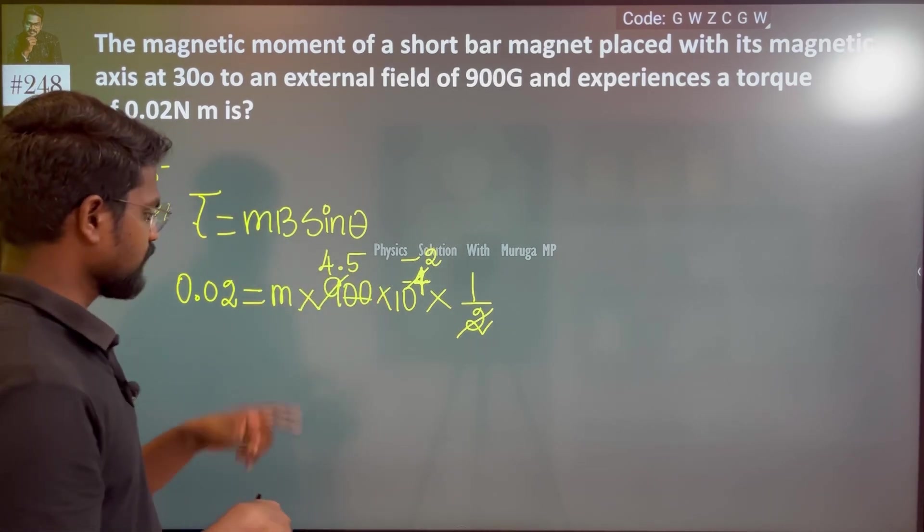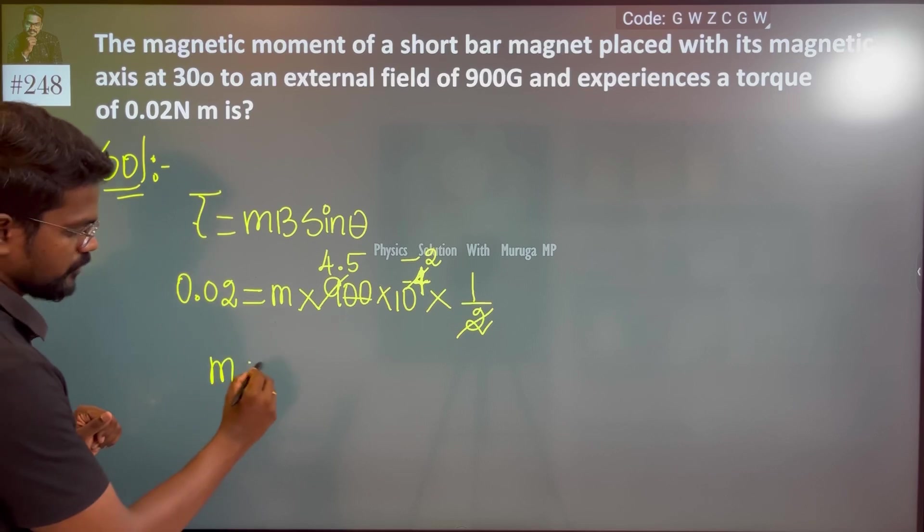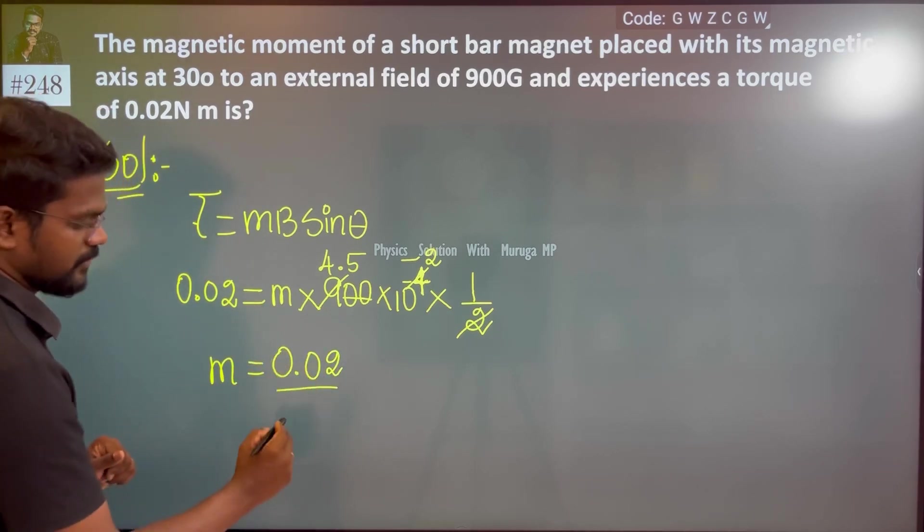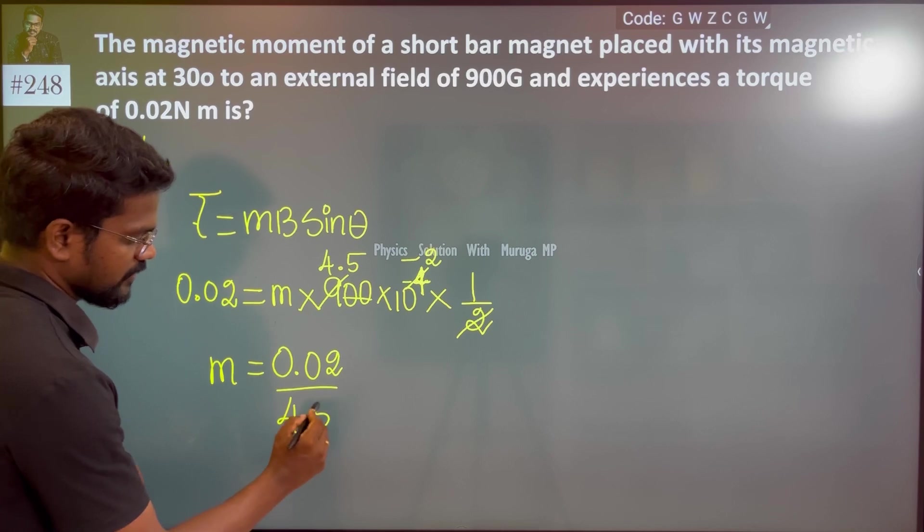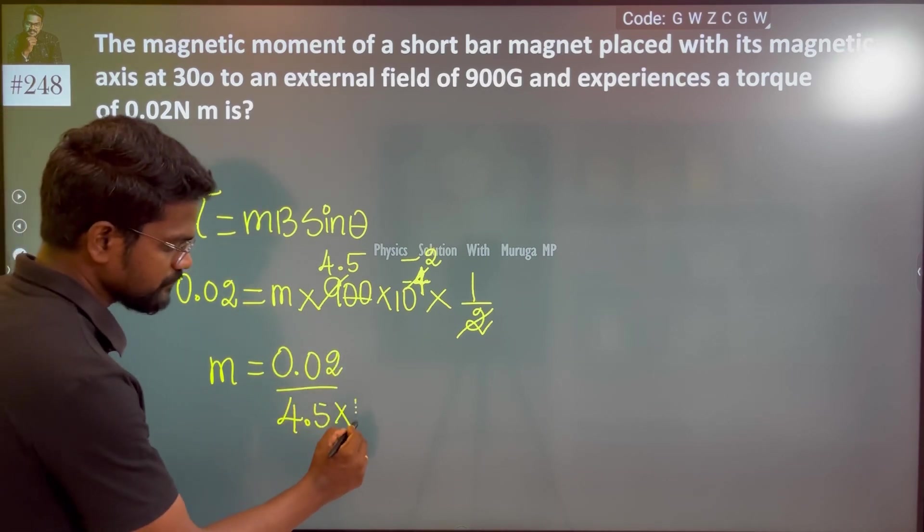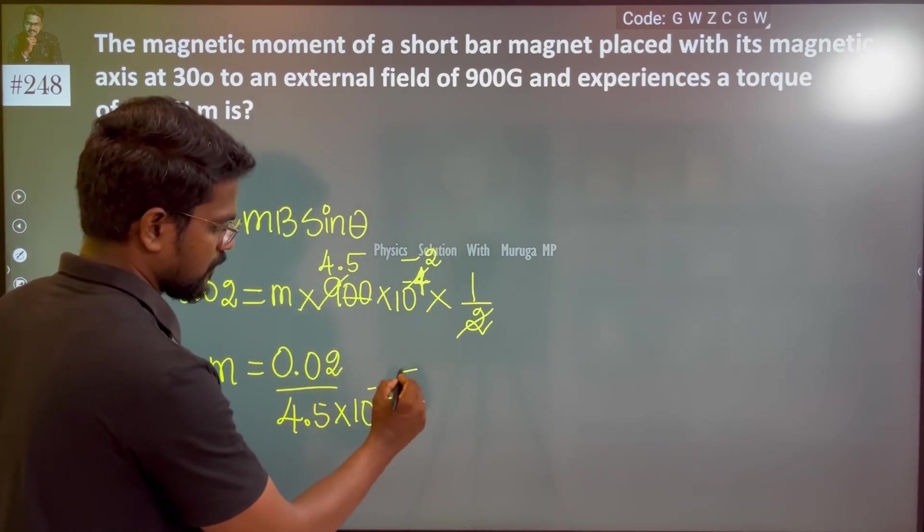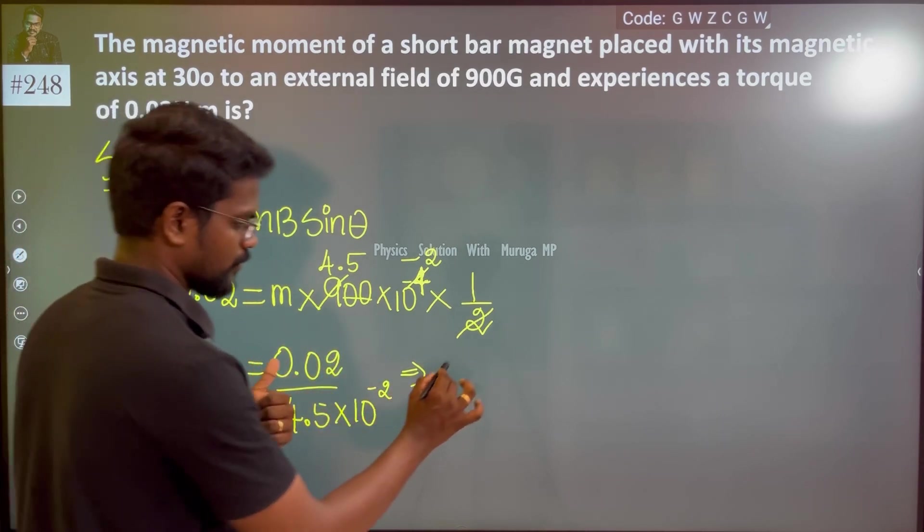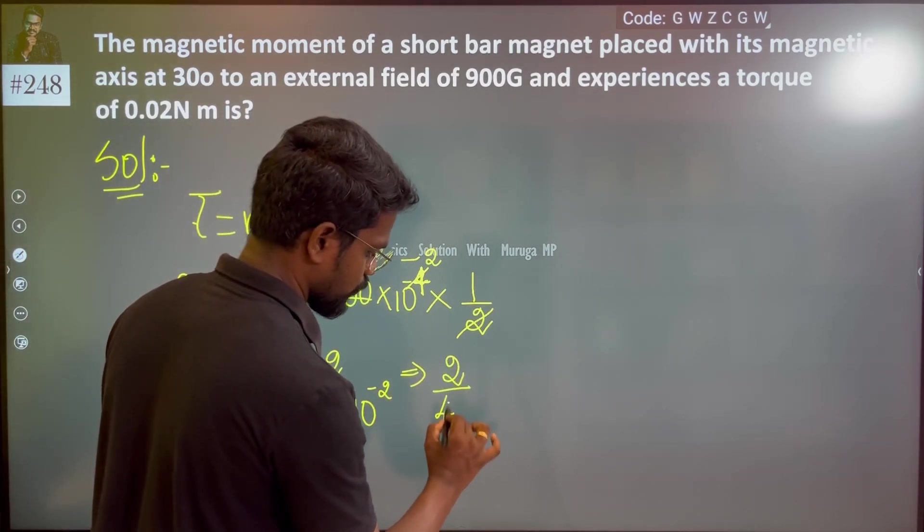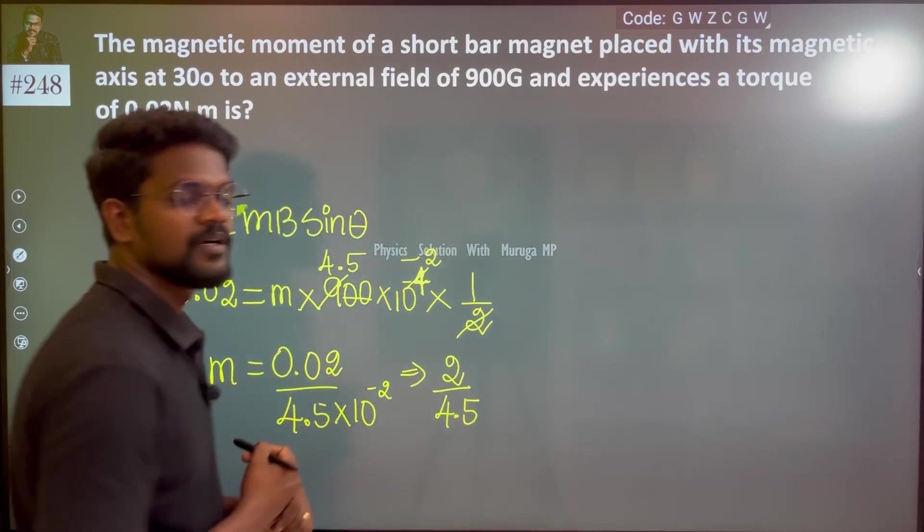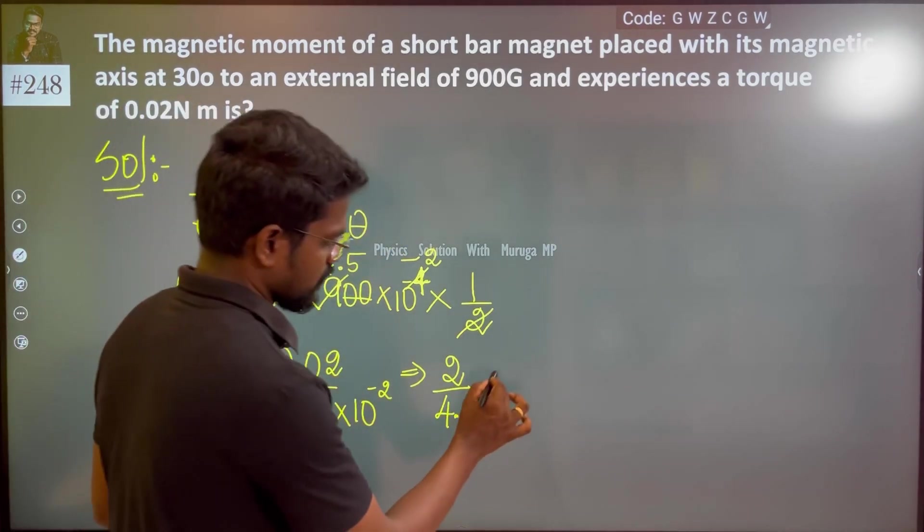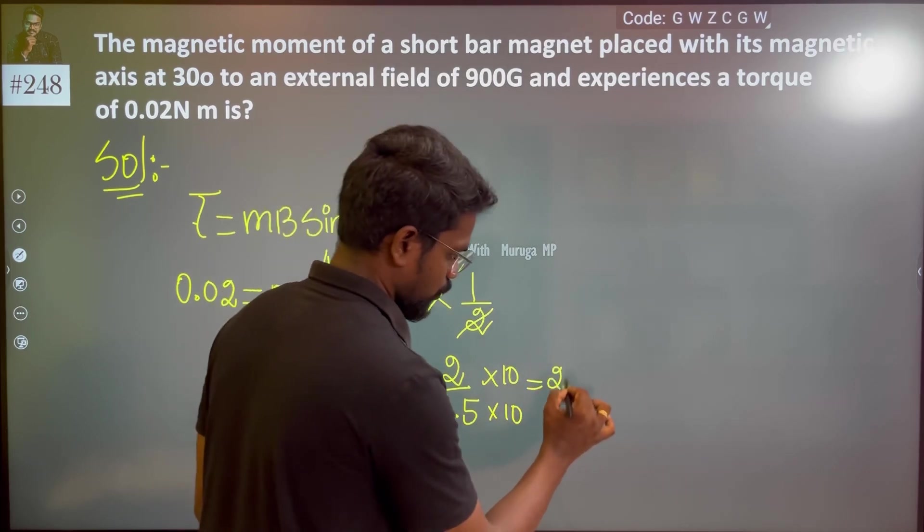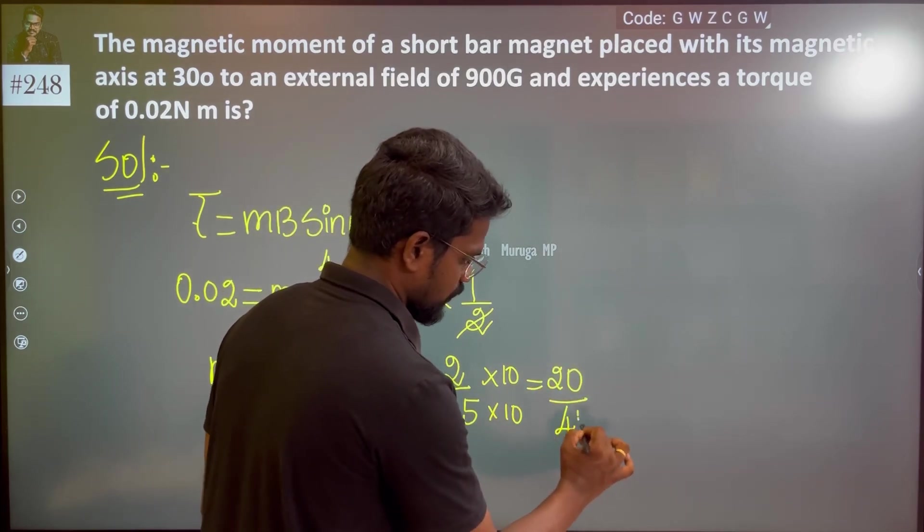Ultimately, we need M. So M equals 0.02 divided by 4.5 into 10 to the power minus 2. When we move 10 to the power minus 2 up, it becomes 100, so 0.02 times 100 is 2 divided by 4.5.